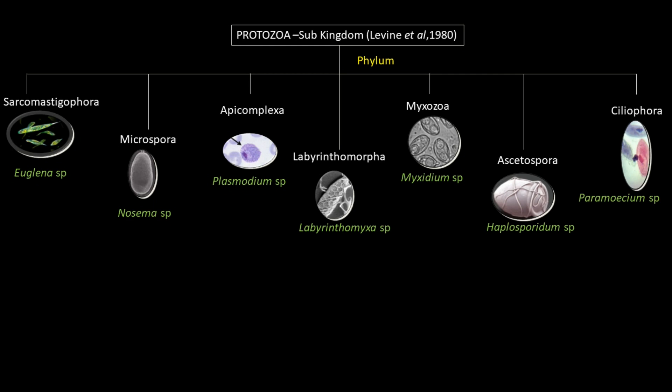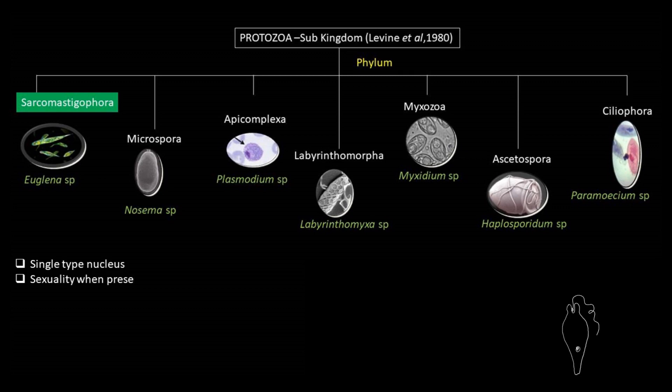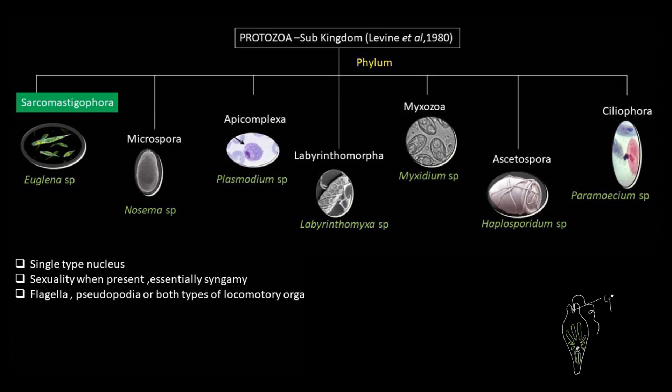We will discuss each and every phylum with very specific characters as explained by Levine et al., with proper pictorial presentations. So let's start the journey with Sarcomastigophora: single-type nucleus; sexuality, when present, essentially syngamy; flagella, pseudopodia, or both types of locomotory organelles are present.